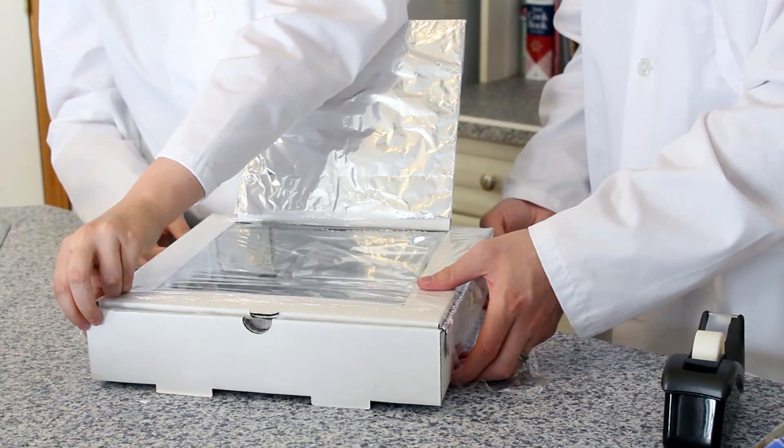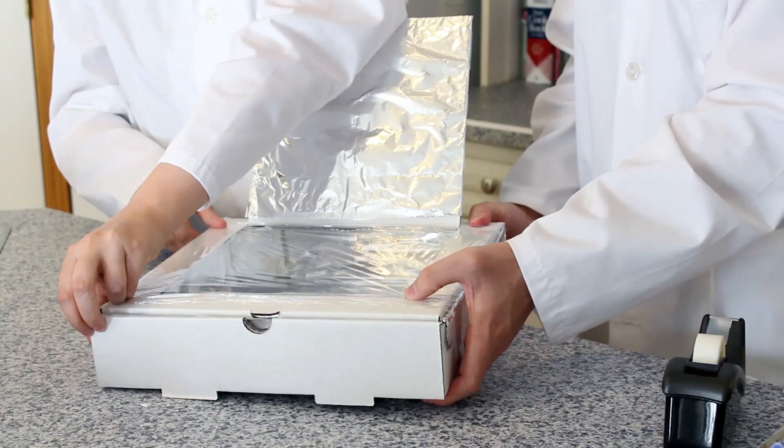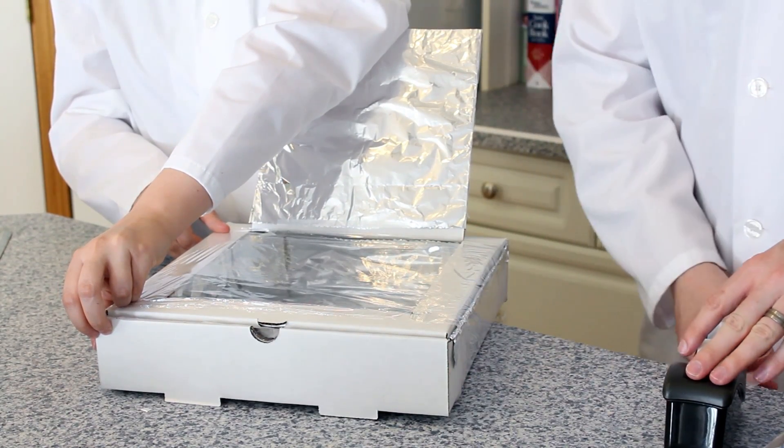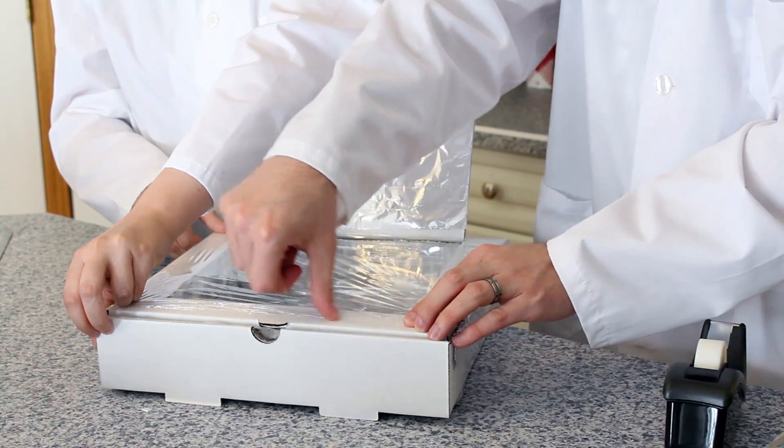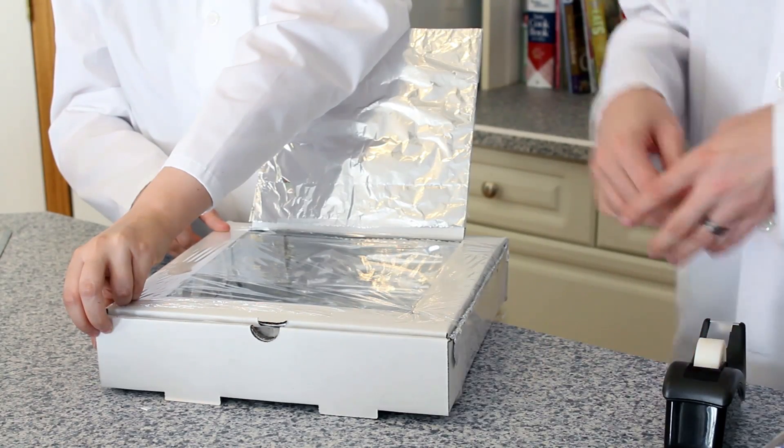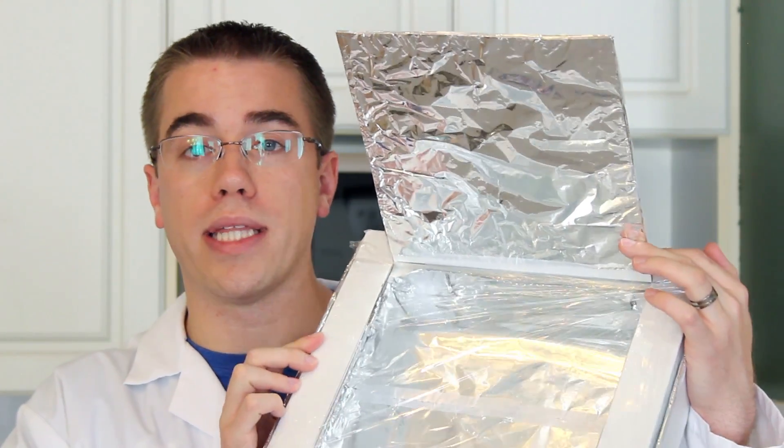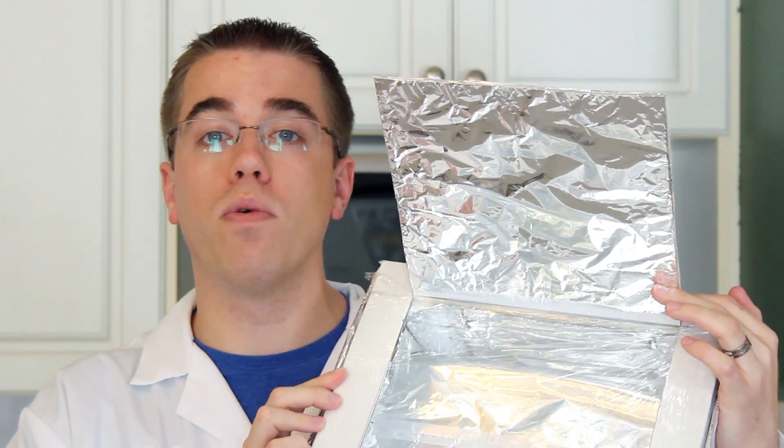Now, we're going to cover the opening in our oven with saran wrap. You're going to want to stretch it tight and seal it with tape so that no air can escape. You may want to put a couple layers of saran wrap on to make sure that the heat is captured within the oven. Once you have your saran wrap on, your oven should look something like this. With your oven ready, we're ready to go outside.